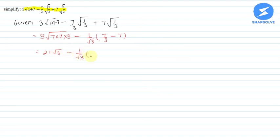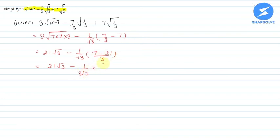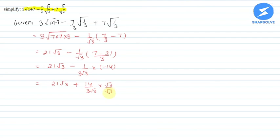So we get 7 minus 21 upon 3, that is 21 root 3 minus 1 by root 3. Multiplying numerator and denominator by root 3 — multiplying above by root 3 and below by root 3 — we get 21 root 3 plus...